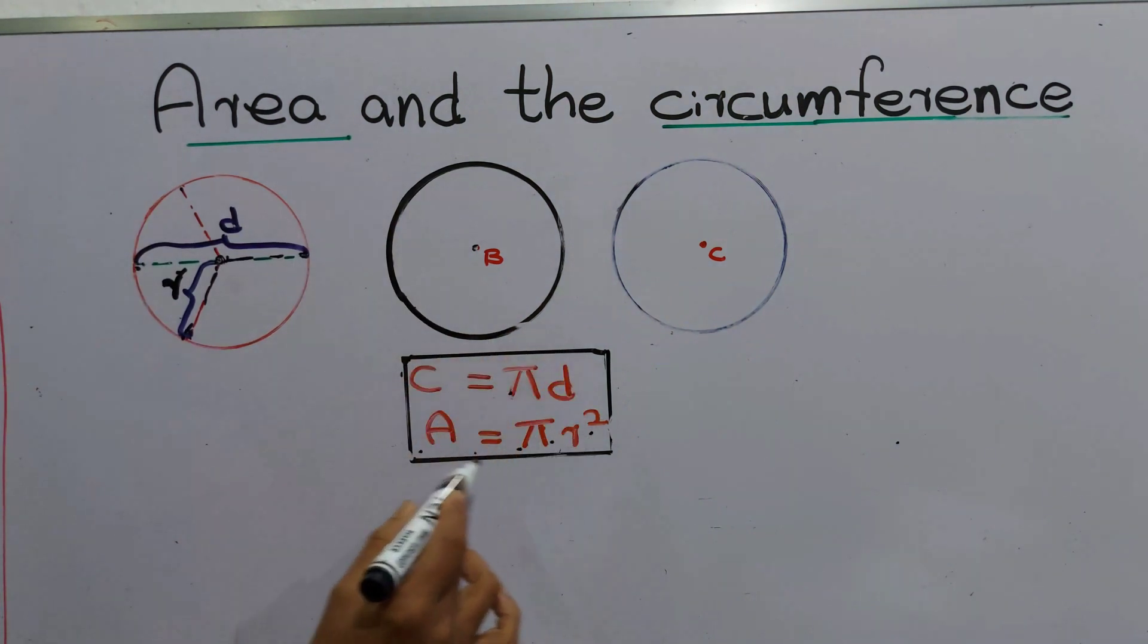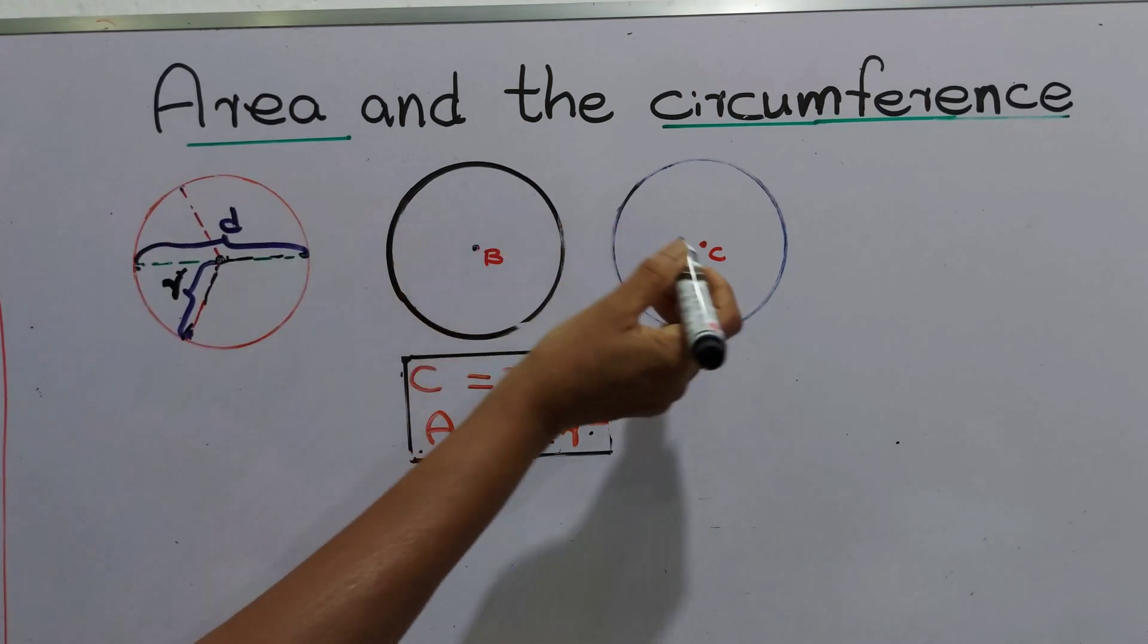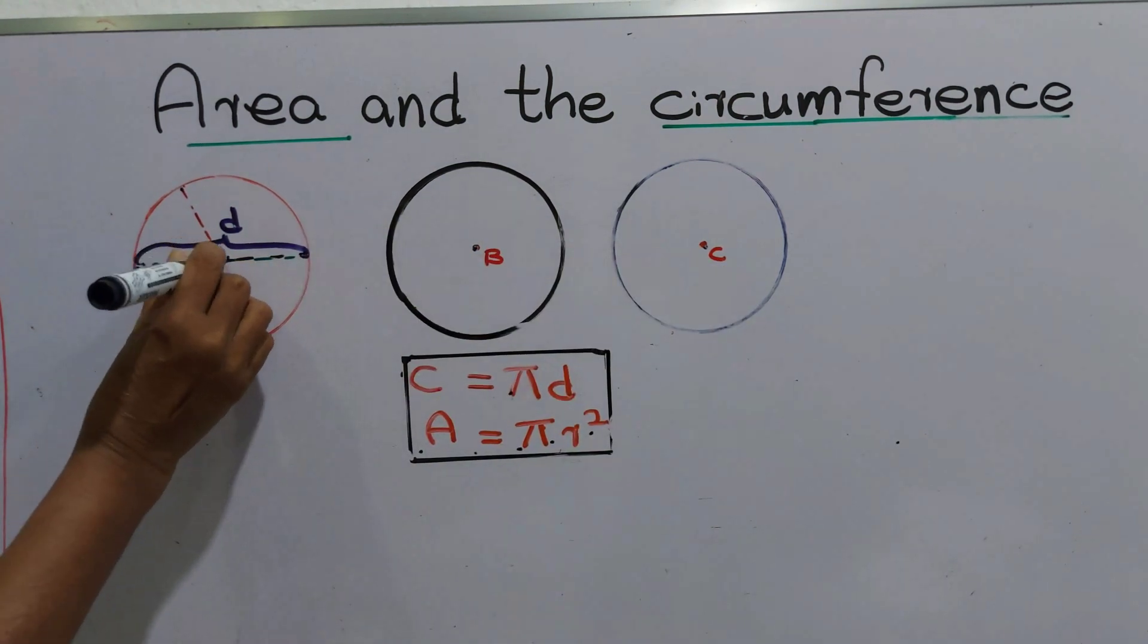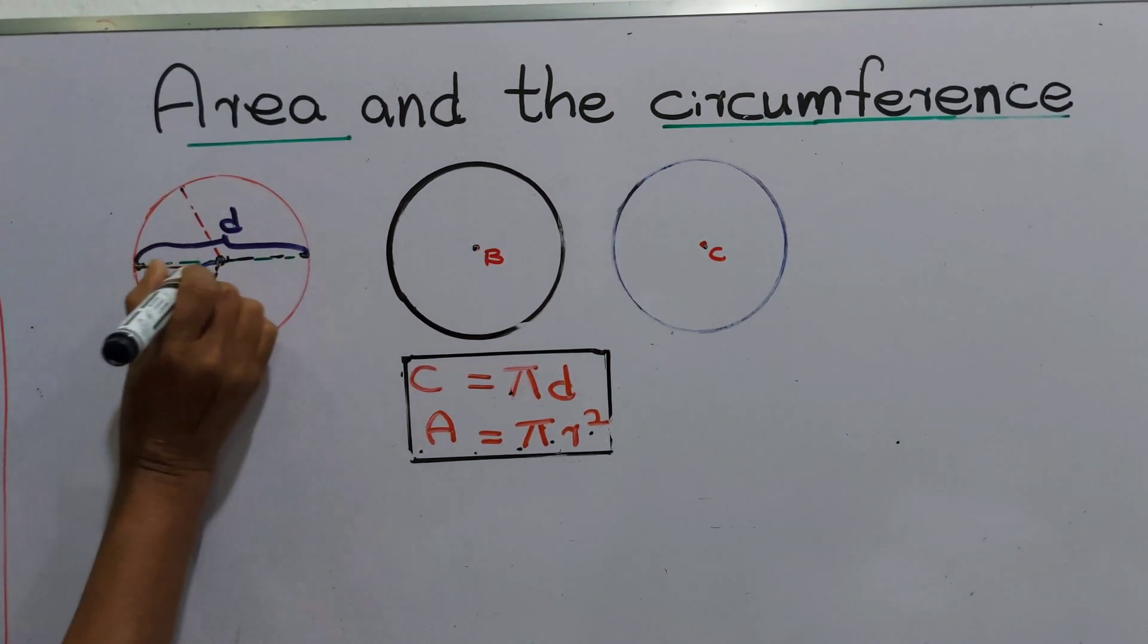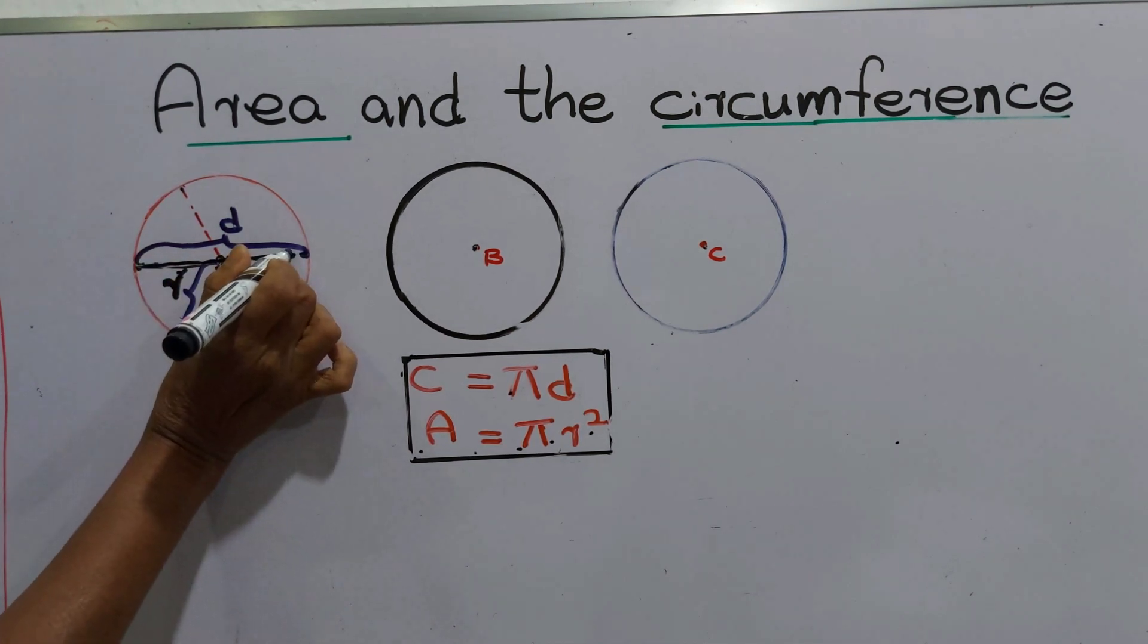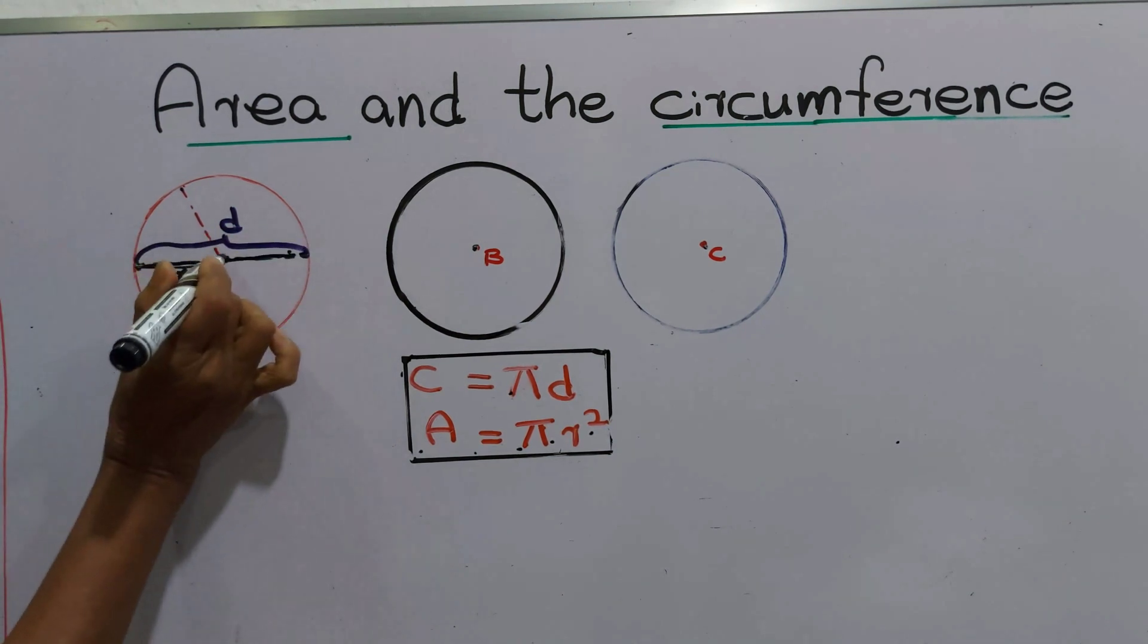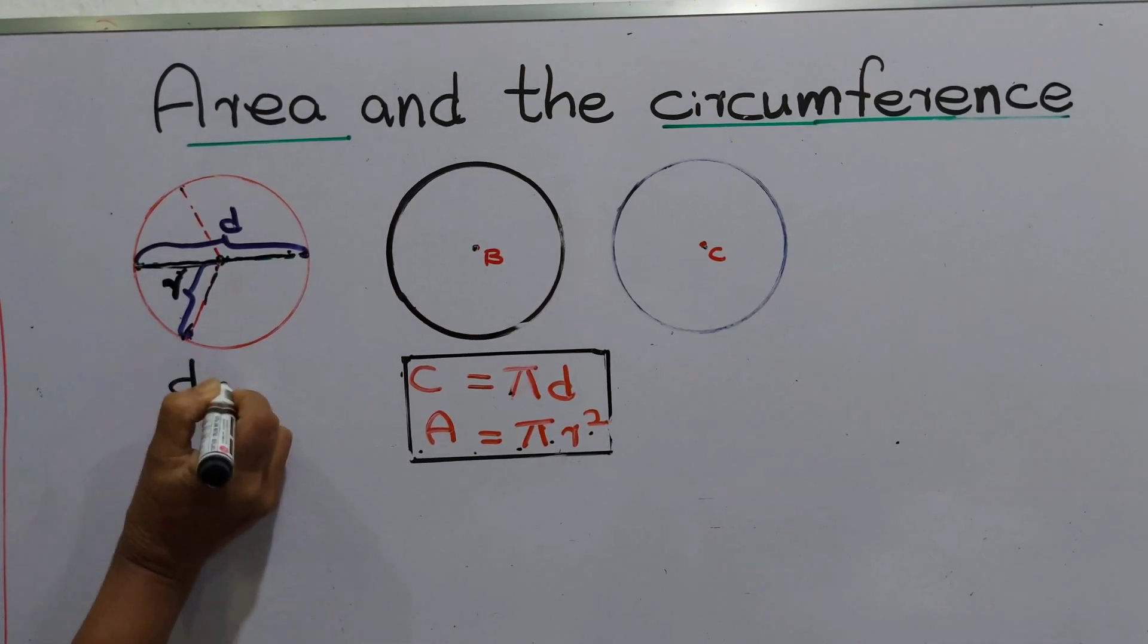These are the two formulas we are going to study today. Before that, look at here. This is the center of this circle. Distance across the circle through the center is called its diameter. This is the diameter. We introduce it as d.